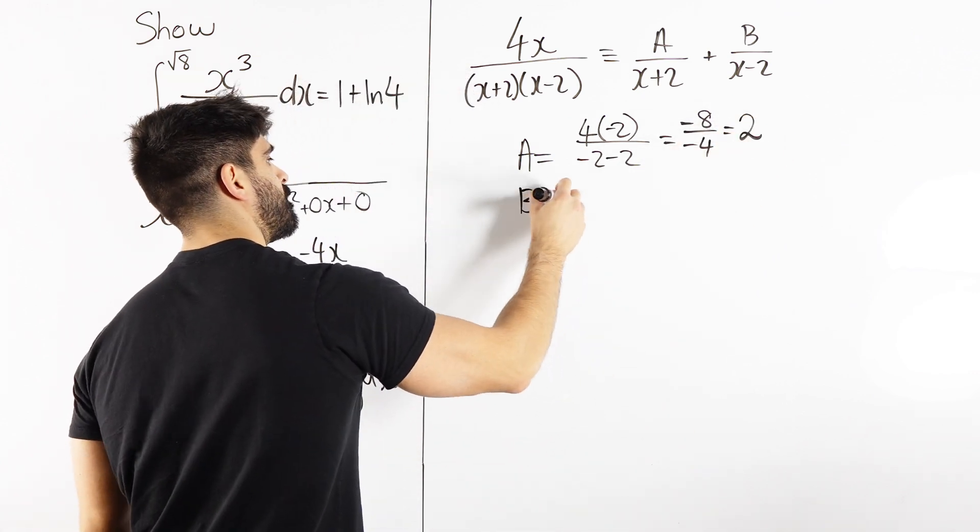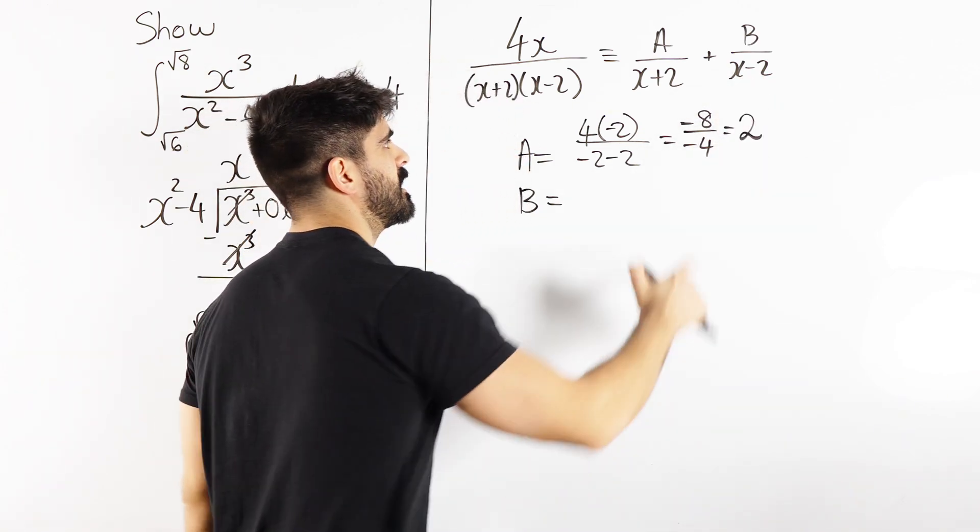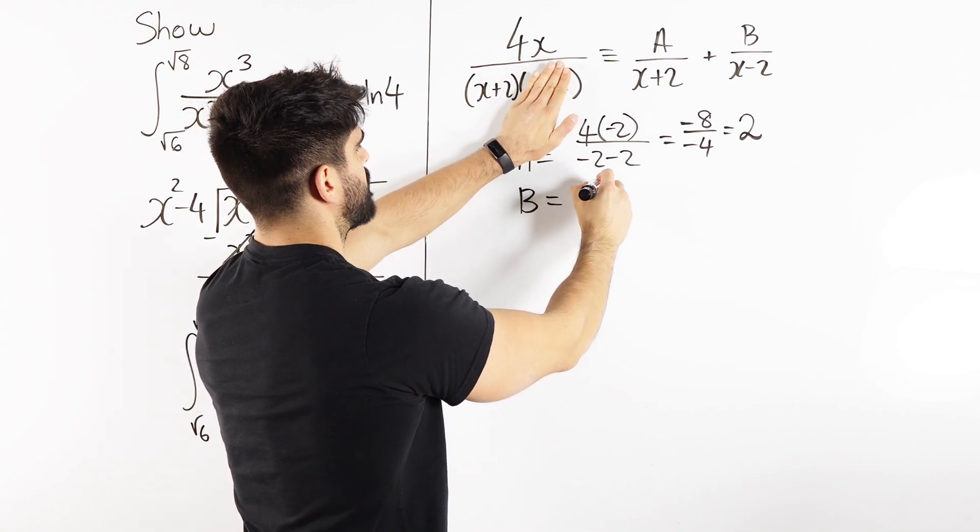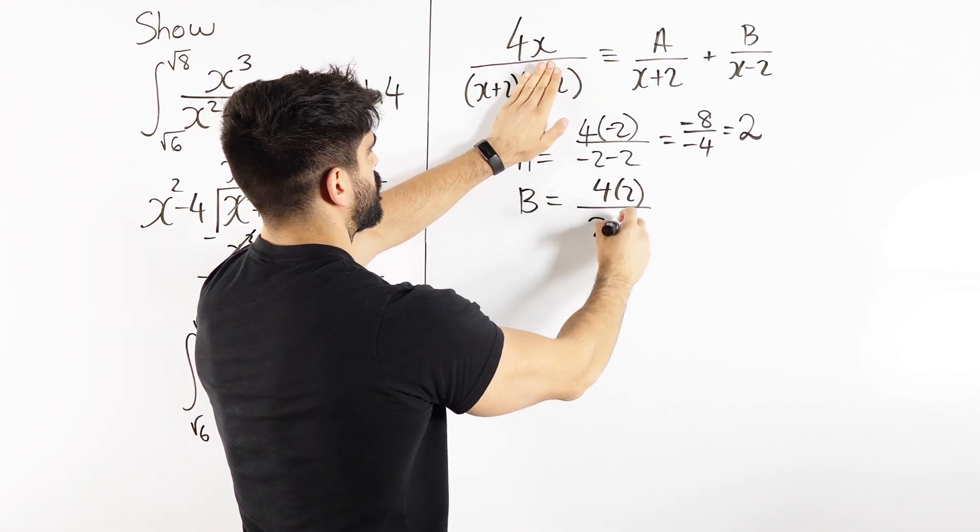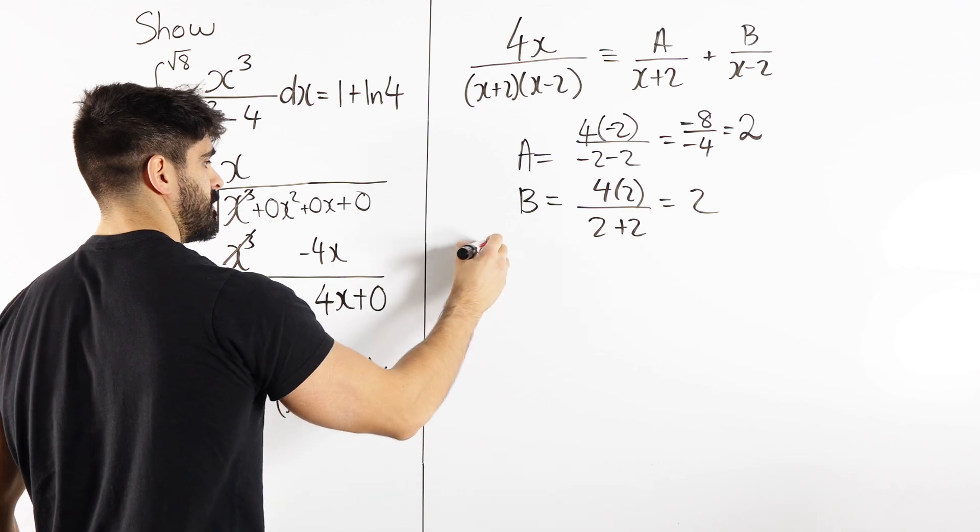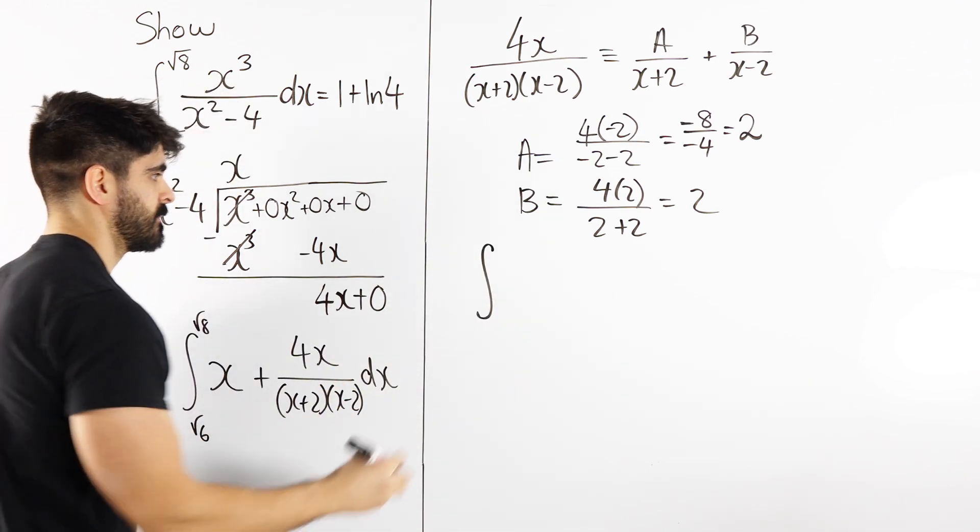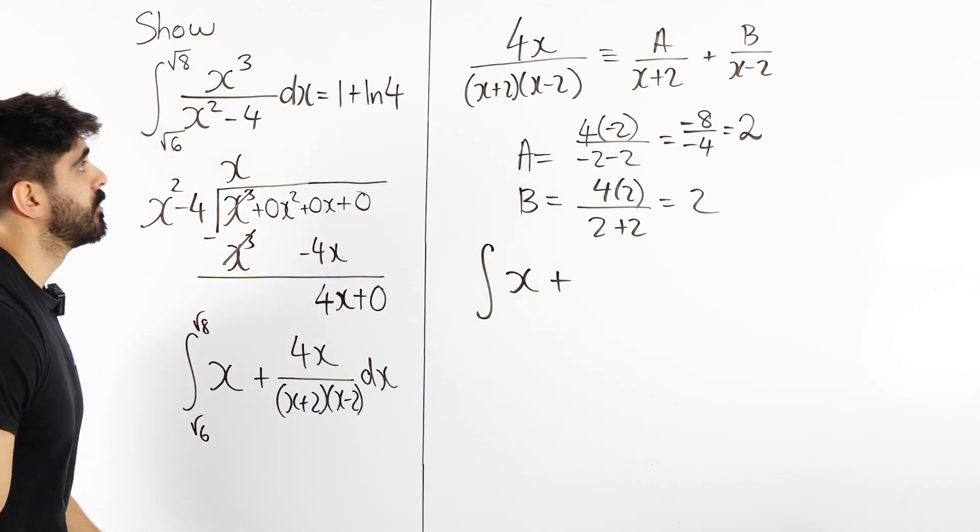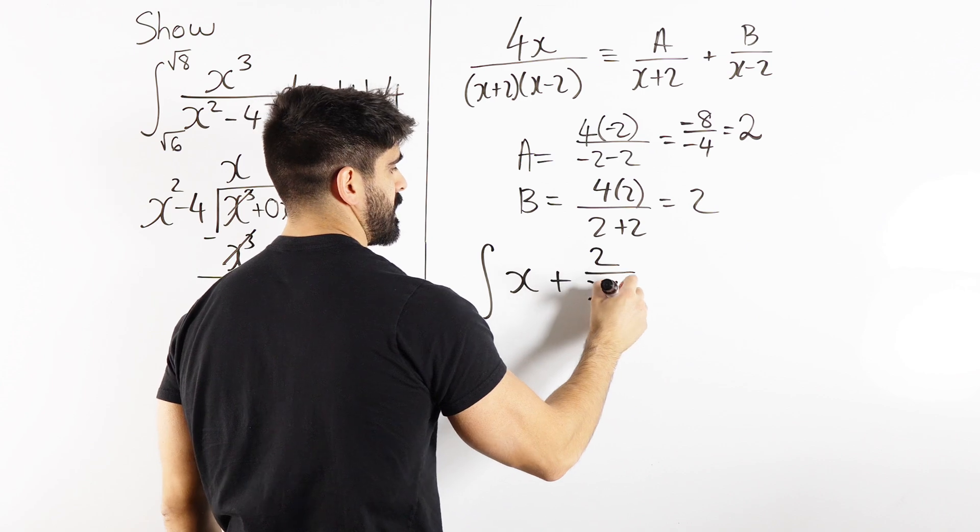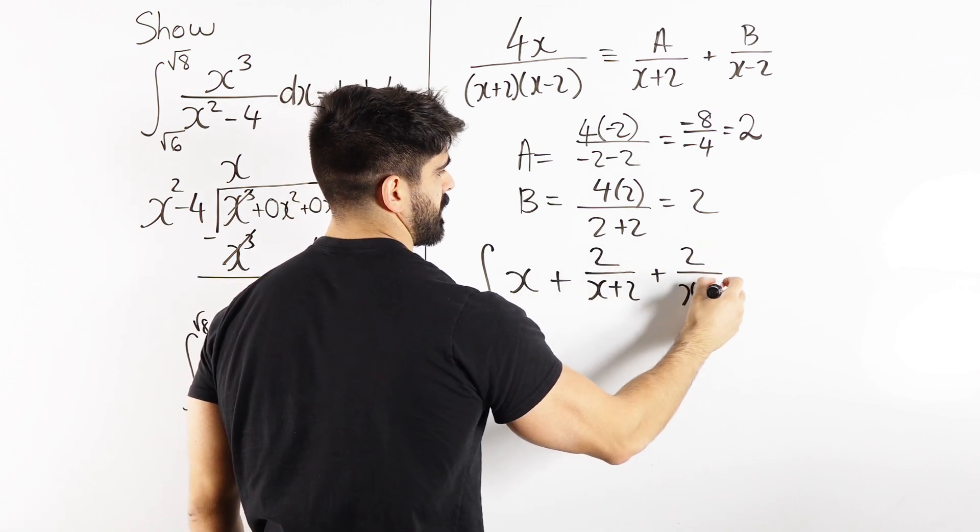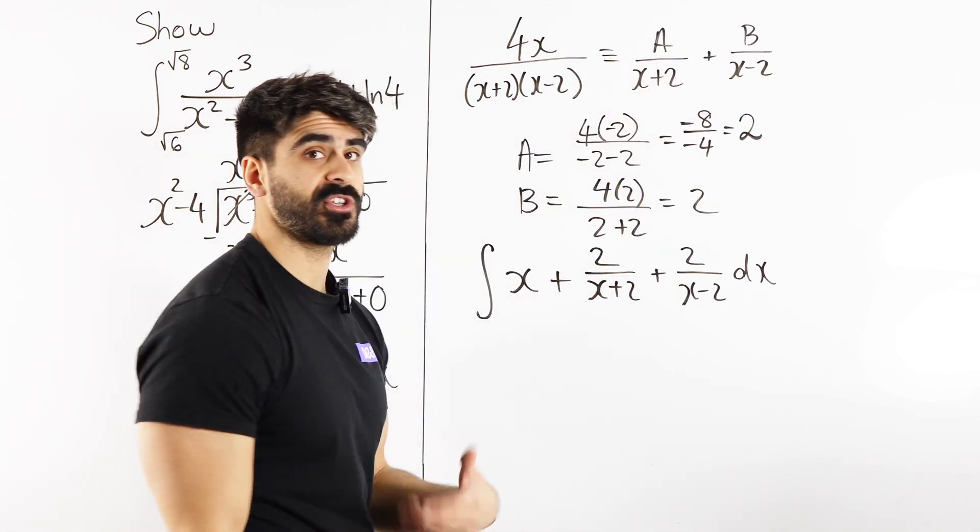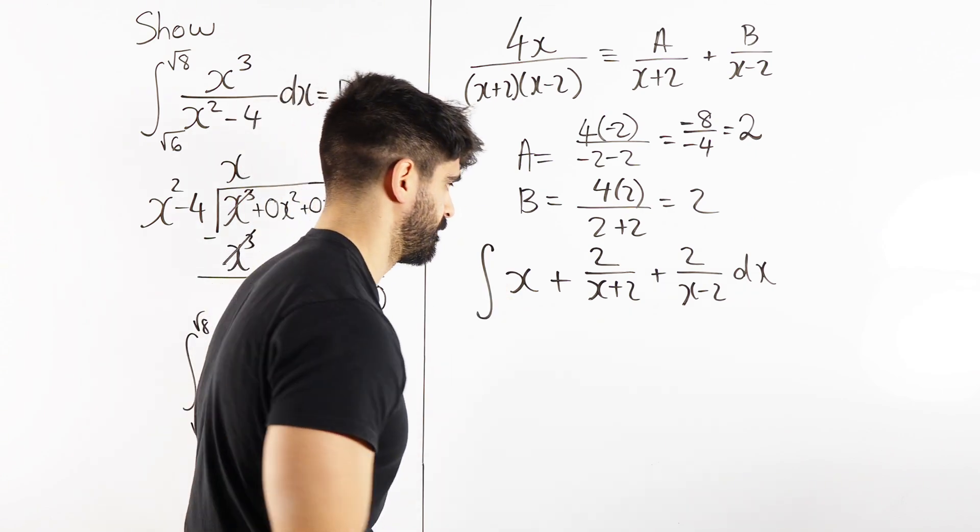Let's do the same thing with b. What would make that denominator 0? It's 2. Cover up the minus 2 on the other side, and you're just going to sub in 2. 4 times 2 over 2 plus 2 is 2. So we're actually integrating then x, and we've got 2 over x plus 2 and 2 over x minus 2. And like I said guys, with the cover-up trick, only do it with linear terms. If it had a bracket squared or bracket cubed, anything like that, do not use it.